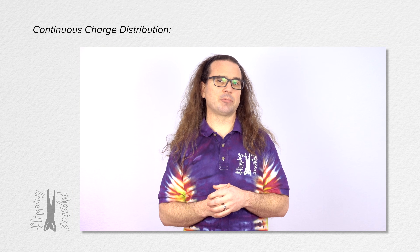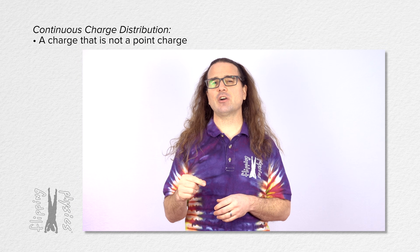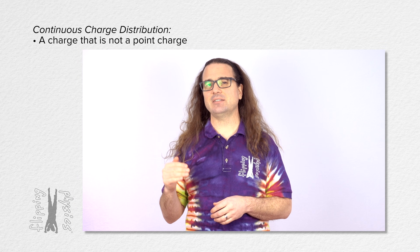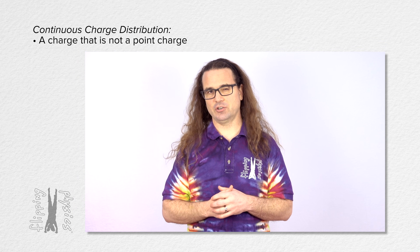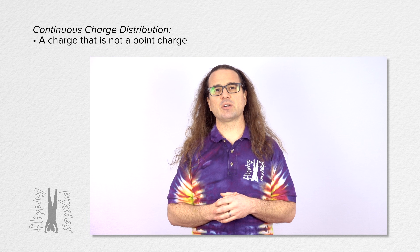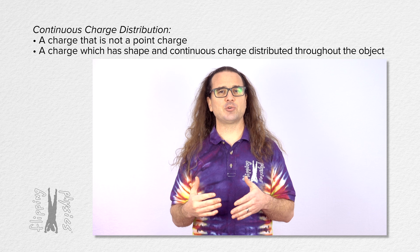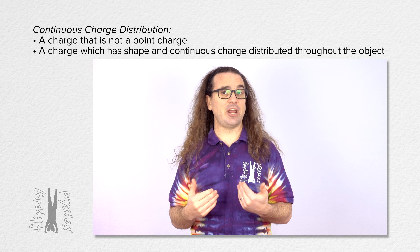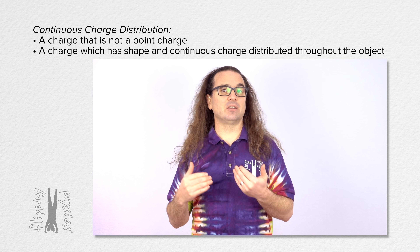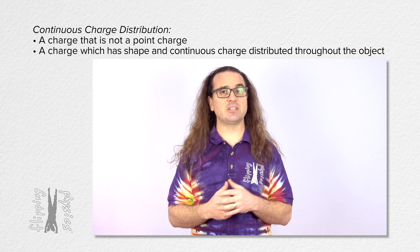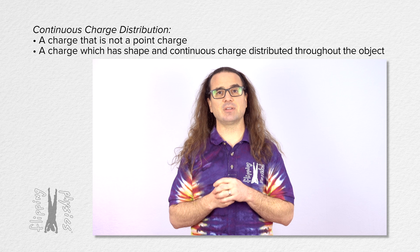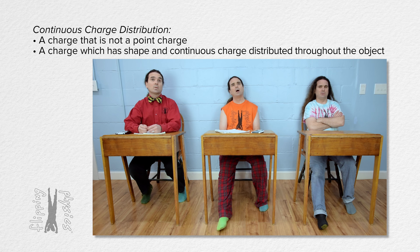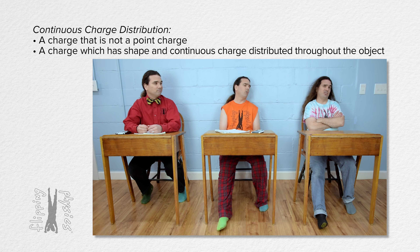A continuous charge distribution is a charge that is not a point charge. In other words, a charge which has a shape and electric charge which is continuously distributed throughout the object. So, a continuous charge distribution is just a charge with shape?